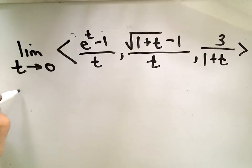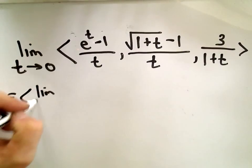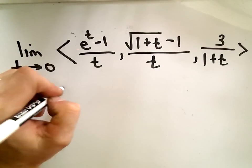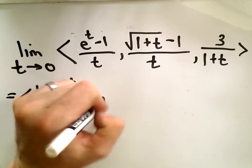Basically, the rule says what you're allowed to do is you're allowed to look at the limit of each piece individually. And that's what we're going to do in this case.